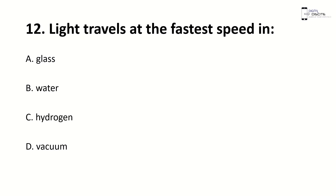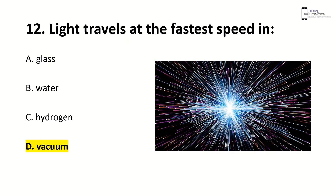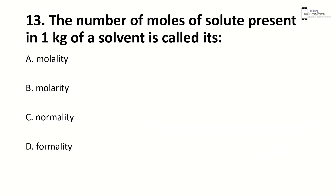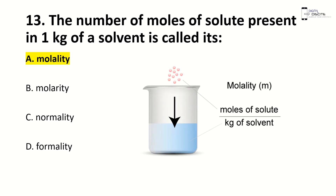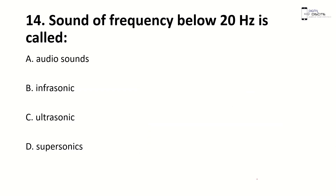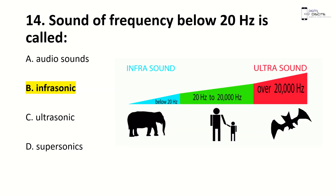Light travels fastest in — right answer is D, vacuum. Note the difference: earlier the question was about sound, now it's about light — so the answers differ. The number of moles of solute present in 1 kg of solvent is called — right answer is A, molality. Sound of frequency below 20 Hz is called — right answer is B, infrasonic. This is the audible range, the ultrasonic range is above, and infrasonic is below.